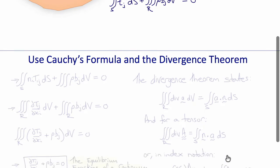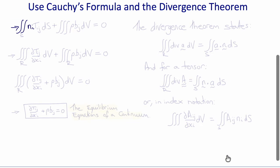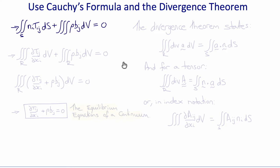We can use Cauchy's formula and the divergence theorem to simplify these integral equations and turn them into differential equations. First, using Cauchy's formula, the surface tractions T-N become Ni Tij, so the equation becomes the surface integral over S of Ni Tij with respect to S, plus the volume integral over R of rho times Bj with respect to V, equal to zero.